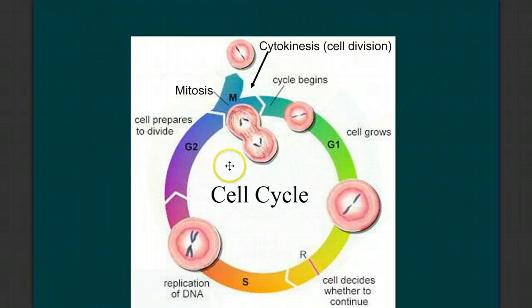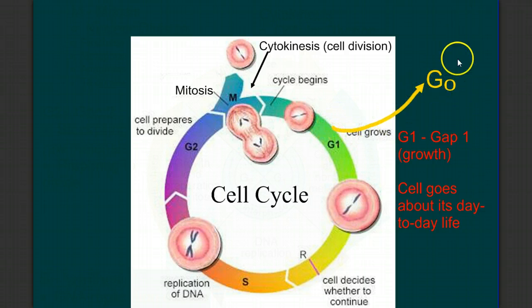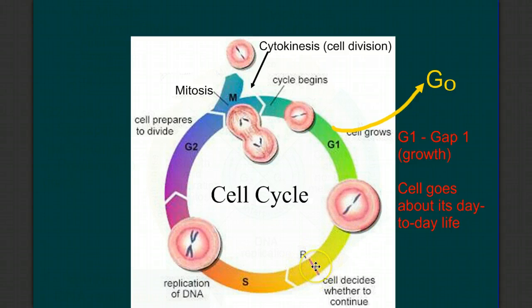Let's look at where each of those events happens in what we call the cell cycle. When a cell is created, it enters into what we call G1, or the gap one phase, sometimes called the first growth phase. This is basically the day-to-day life of a cell, where it's going along doing whatever that cell is designed to do. For many cells, they're never going to leave G1, and they move into what we call G0 — a stage of life where they're never going to divide. They'll do their job until it's time for that cell to die, but they're never going to divide again. Brain cells, neurons, tend to do this. But other cells are going to grow, and at some time in their day-to-day life, they receive some signal or stimulus that it's time to divide.